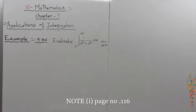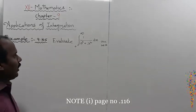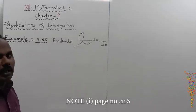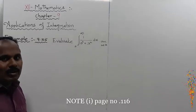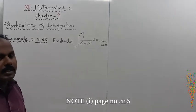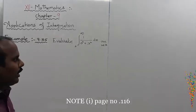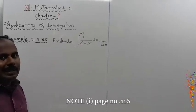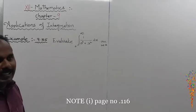Example 9.35: Evaluate the integral from 0 to infinity of 1 divided by (x squared plus a squared) dx, or (a squared plus x squared) dx. This is called improper integration.